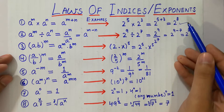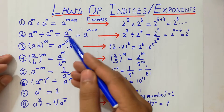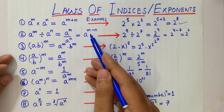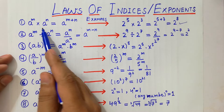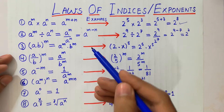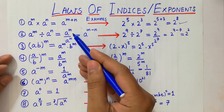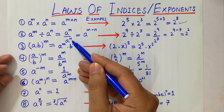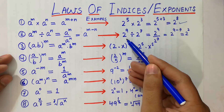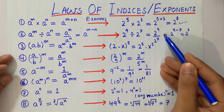The second law: a raised to power m divided by a raised to power n is equal to a raised to power m minus n. When the bases are the same and the expression is divided, the powers are subtracted. The denominator exponent moves to the numerator with a negative sign. For example, 2 raised to power 9 divided by 2 raised to power 7 is equal to 2 raised to power 9 minus 7, which equals 2 raised to power 2.